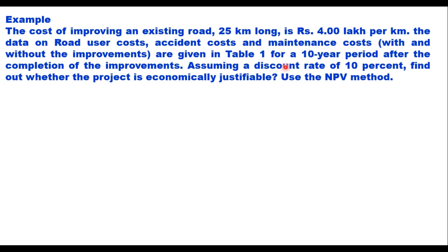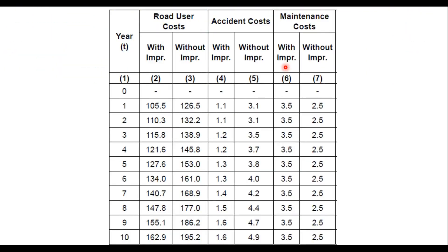And what is table 1? Table 1 gives you the road user cost with improvement and without improvement, accident cost with improvement and without improvement, and similarly maintenance cost with improvement and without improvement. So, in the first year there is no benefit, only cost. You will be spending 25 into 4, that is 100 lakhs of rupees to improve the road.